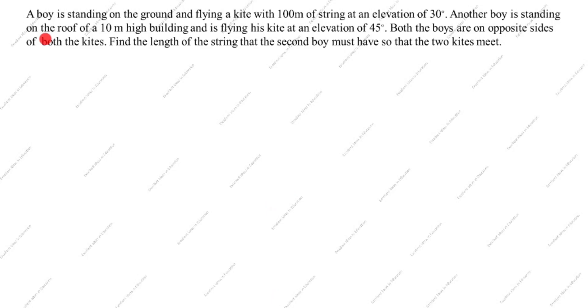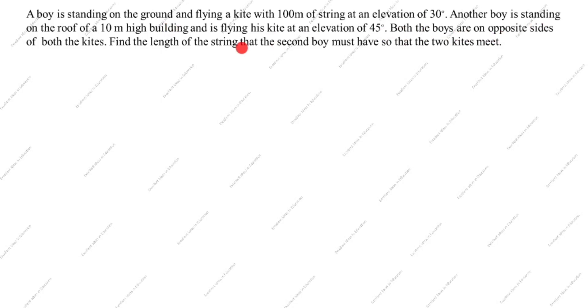Welcome to my channel, Excellent Ideas in Education. Today we are going to learn about some applications of trigonometry. This is a very important problem: a boy is standing on the ground and flying a kite with 100 meters of string at an elevation of 30 degrees. Another boy is standing on the roof of a 10-meter high building and flying his kite at an elevation of 45 degrees. Both boys are on opposite sides.